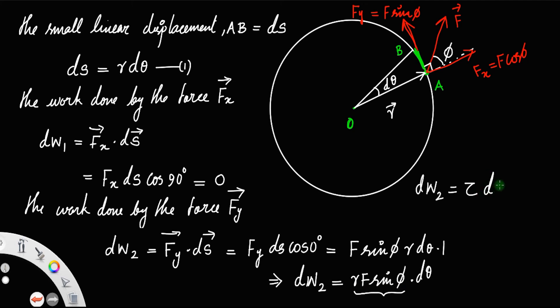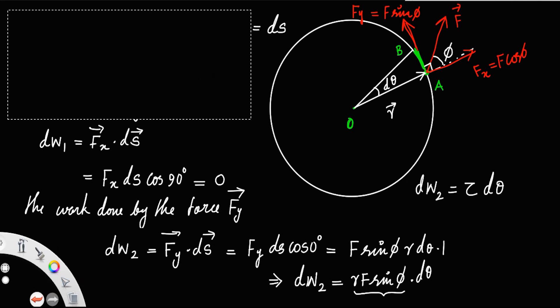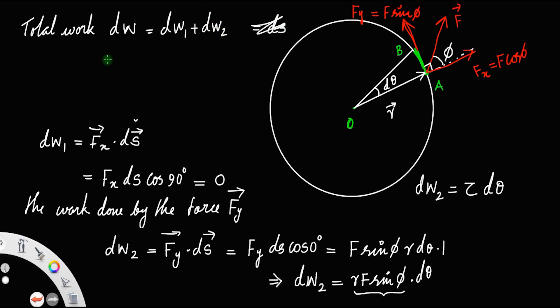Torque dθ, so that is dW. To get the total work, we have to add the work done by these two forces. Therefore, the total work dW will be the sum of the works done by these two forces. This is equal to dW1, we got that as 0, and dW2 is equal to τ dθ.